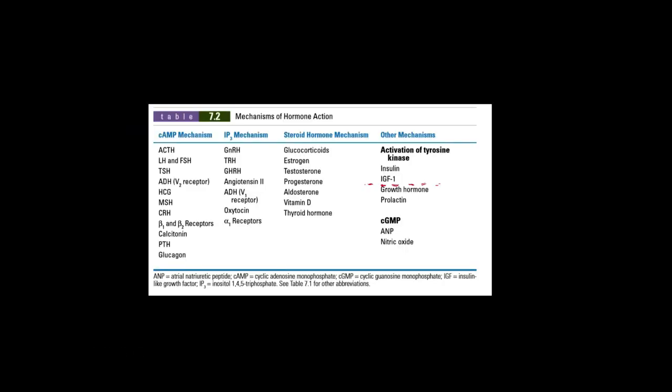This is a table that says which hormones act via which mechanism. This mechanism, cyclic AMP, would be the Gs or Gi. IP3 would be Gq. Steroid hormones, all these are classic derived from cholesterol: steroid hormones, glucocorticoids and cortisol, estrogen, testosterone, progesterone, aldosterone, vitamin D, and then there's the thyroid hormone, which remember technically is an amine hormone but it acts like a steroid hormone.